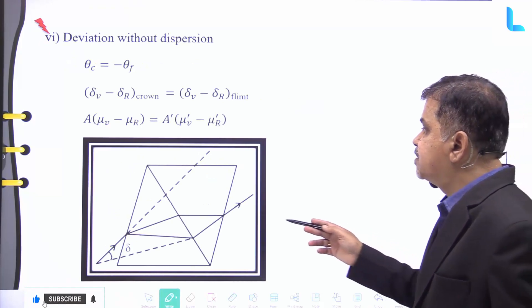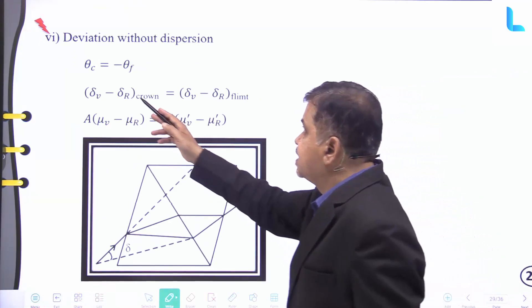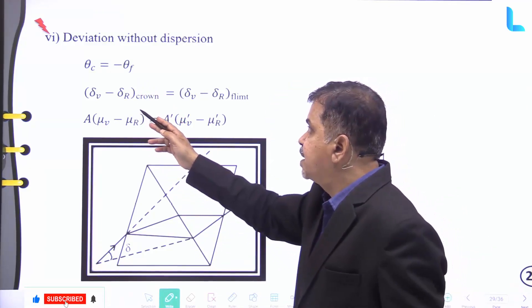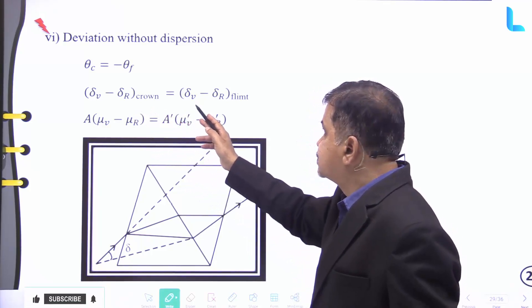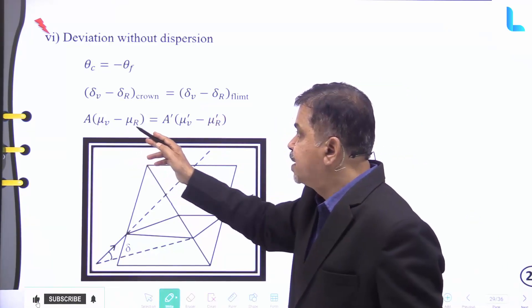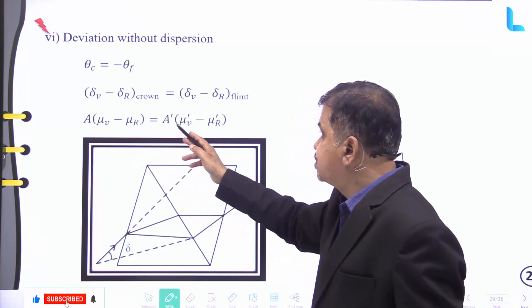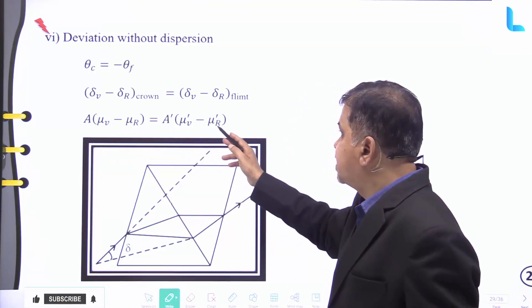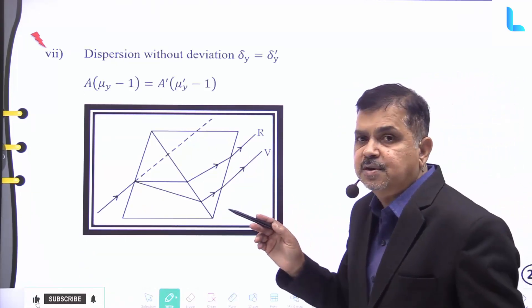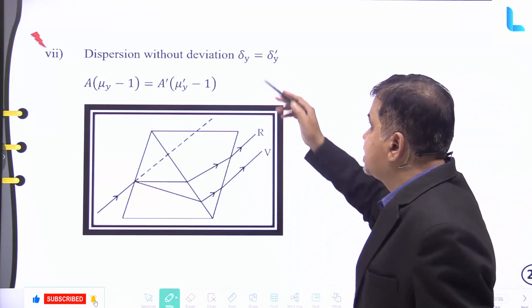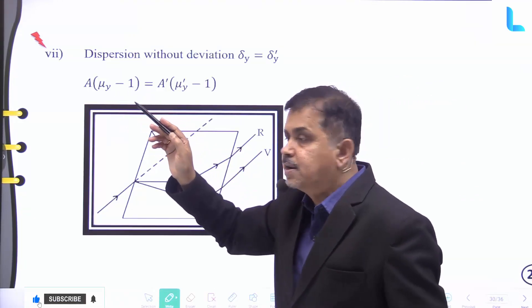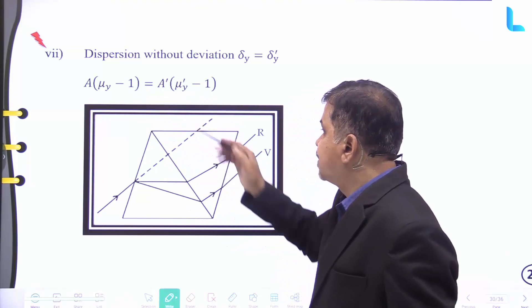For deviation without dispersion: θ_crown = −θ_flint, so A(μ_v − μ_r) = A'(μ_v' − μ_r'). For dispersion without deviation: δ_y = δ_y', so A(μ_y − 1) = A'(μ_y' − 1).